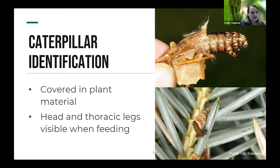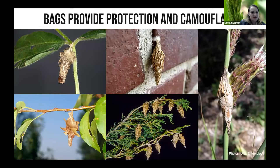When you see a bagworm caterpillar actively feeding on a plant, you're going to be able to see its head and thoracic legs visible. They've been described as kind of upside-down ice cream cones, except the ice cream is a caterpillar. These caterpillars are a dull brown color with a little bit of black and white mottling towards the head. The caterpillars make these bags to provide protection and camouflage against potential predators such as birds, protection against potential parasites, and also against insecticides.